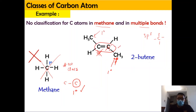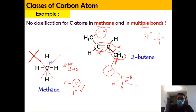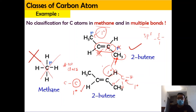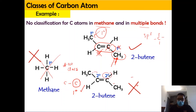The carbons directly involved in the double bond cannot be classified. However, the terminal CH3 carbons attached to that double-bond carbon can be classified as primary carbon — both of them. But the double-bond carbons themselves cannot be classified. If you were to write one as secondary carbon, that would be wrong, because we cannot classify a multiple-bond carbon.